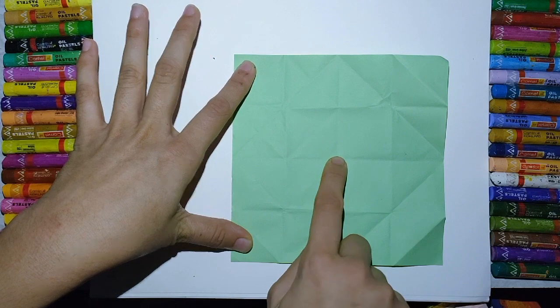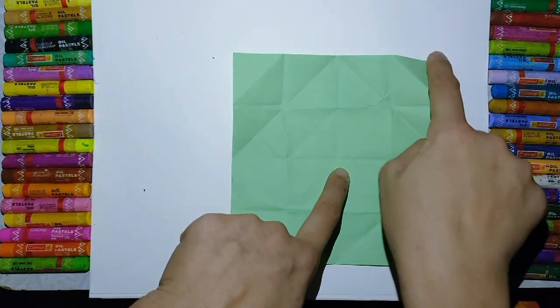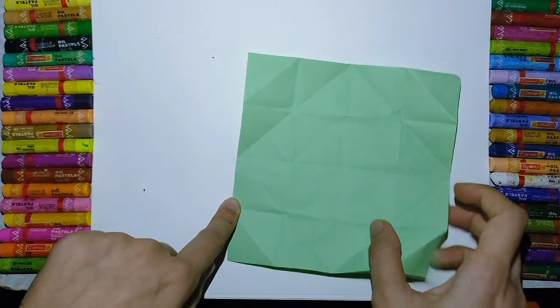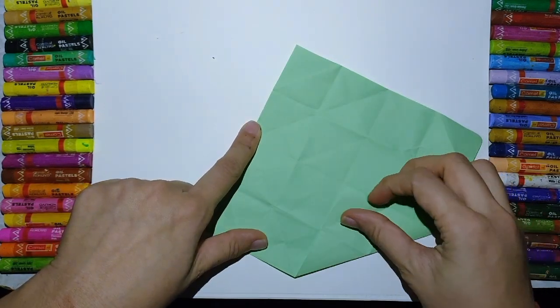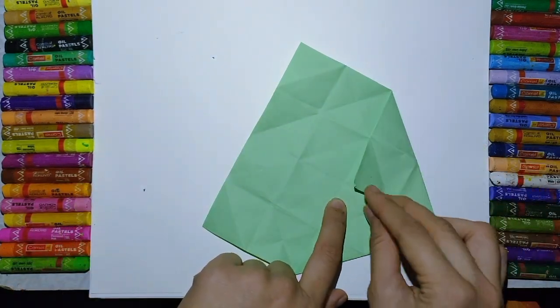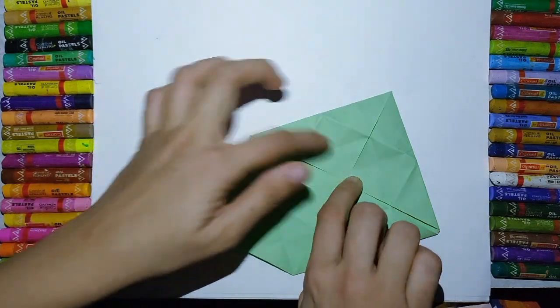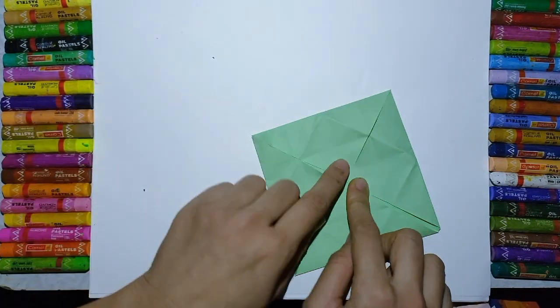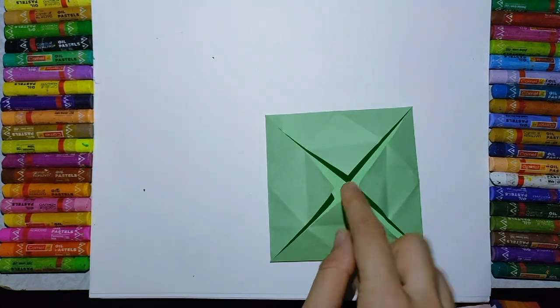This is the center. These are the four corners here. This is the center of the paper. Now this corner will come here. This corner will come here. This one will come here, and this corner is here. All four corners are at the center of this paper.